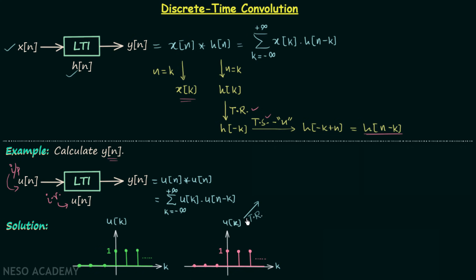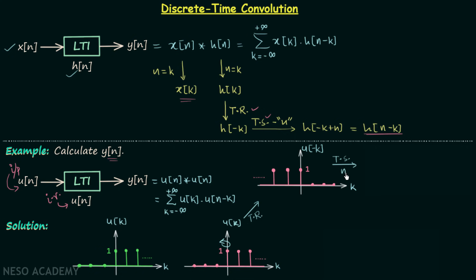In time reversal we simply flip the signal waveform about the y-axis, giving us the plot of u[-k]. Upon this new signal we perform the time shifting operation by integer n. The resulting waveform is shifted, and this signal is u[n-k]. So we now have u[n-k] and u[k].